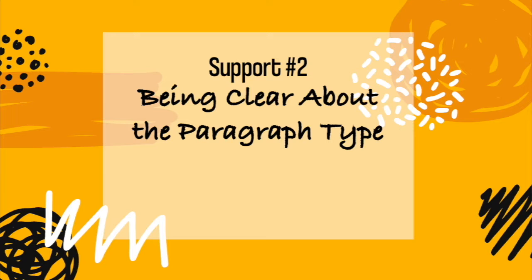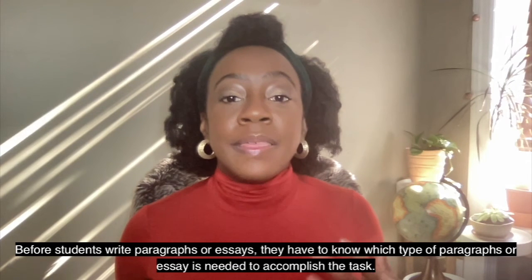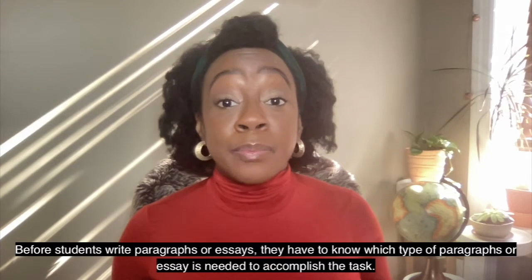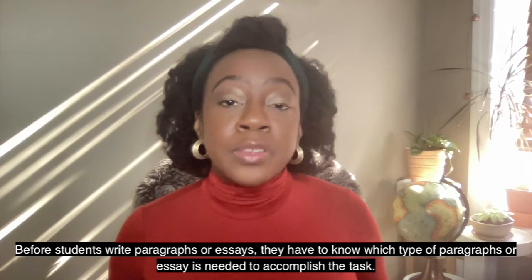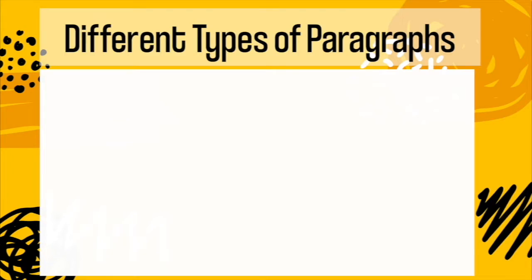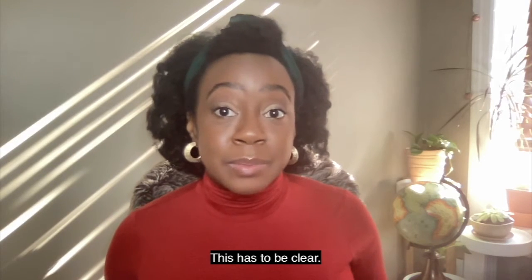Support number two: be clear about paragraph type. Before students write their paragraphs or even their essays, they have to be clear about what type of paragraph or essay they need to write to accomplish the task. Are they writing to compare and contrast? Are they writing to show cause and effect? Are they trying to explain the steps leading up to a major event? This has to be clear.